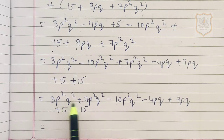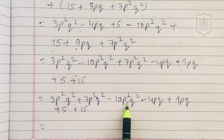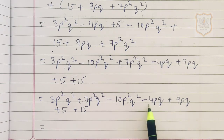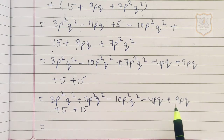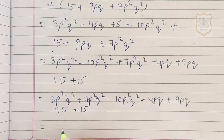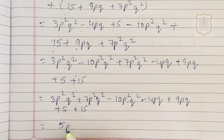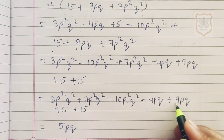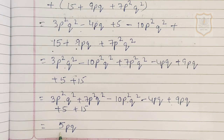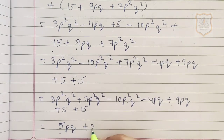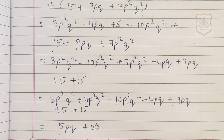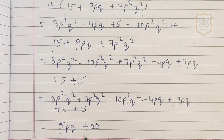For minus 4pq plus 9pq: 9 minus 4 is 5, and since 9 is greater the sign is plus, giving 5pq. Then 5 plus 15 gives 20. So the answer is 5pq plus 20.